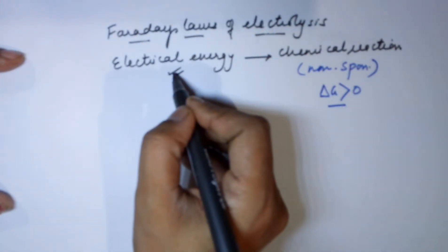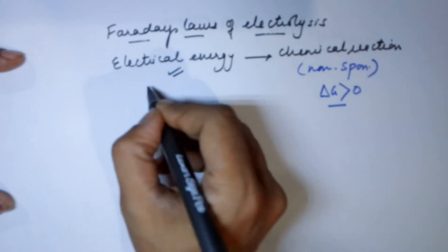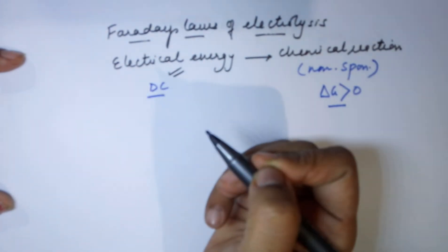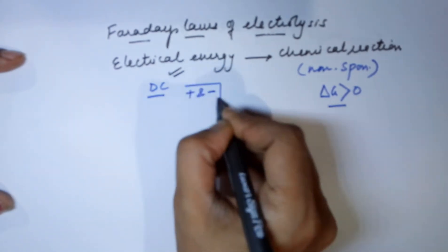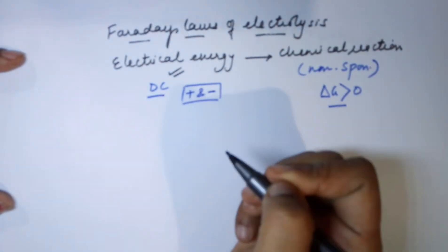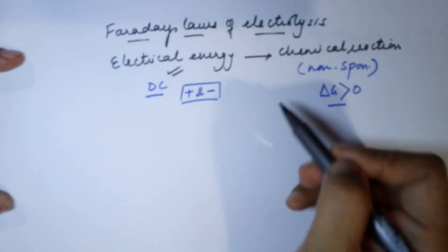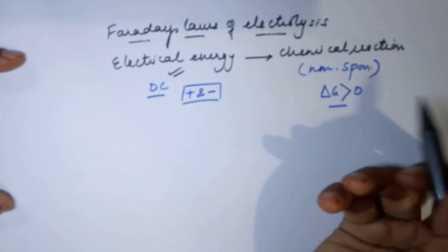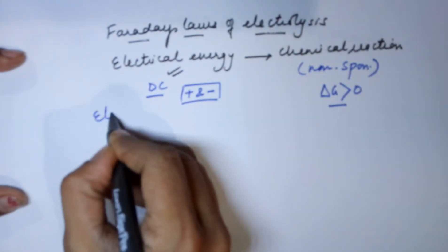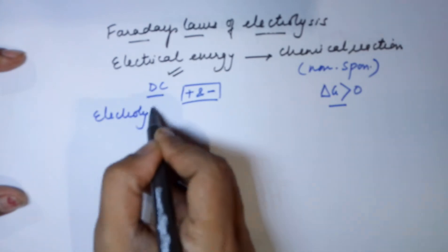The source of current that we use during electrolysis has to be a DC — a direct current source — so that the positive and the negative terminals are fixed. The reaction of electrolysis happens in a cell. This device is also called the electrolytic cell.